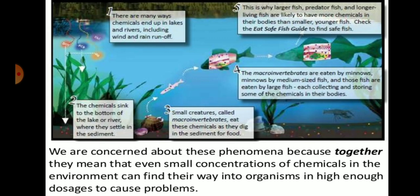These chemicals sink to the bottom of lakes or rivers and settle in sediments. Small creatures called macroinvertebrates eat these chemicals as they dig in sediment for food. These macroinvertebrates are eaten by minnows, then by medium-sized fish, and those fish are eaten by large fish — each collecting and storing some chemicals in their body. This is why larger, predator, and longer-living fish are likely to have more chemicals in their bodies than smaller fish.